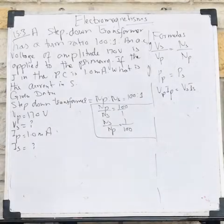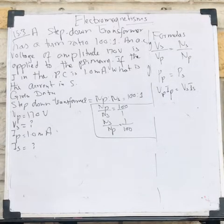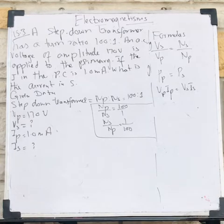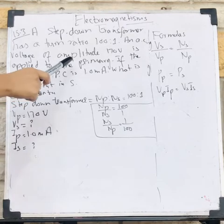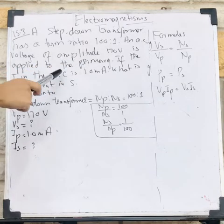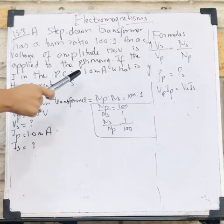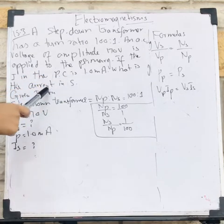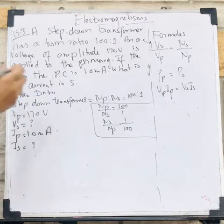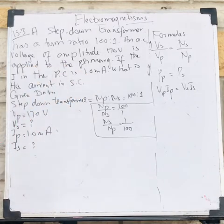Problem 15.3. Let's read this statement together. A step-down transformer has a turn ratio 100 to 1, and an AC alternating voltage of amplitude 170V is applied to the primary. If the current in the primary coil is 1.0 milliampere, what is the current in the secondary coil? So let's read this statement once again for more clarification.